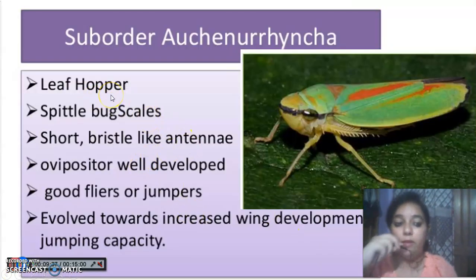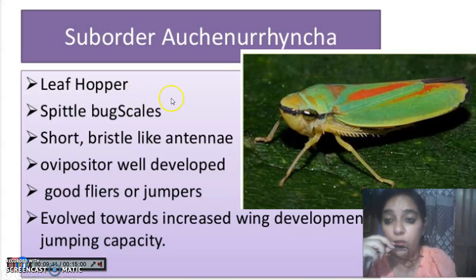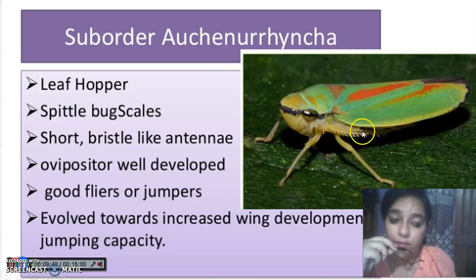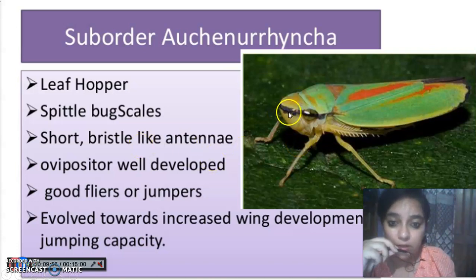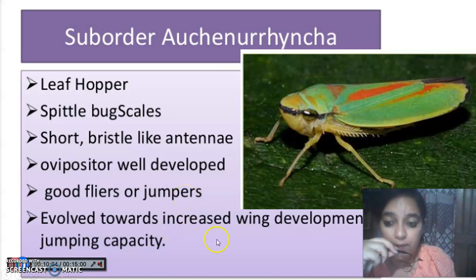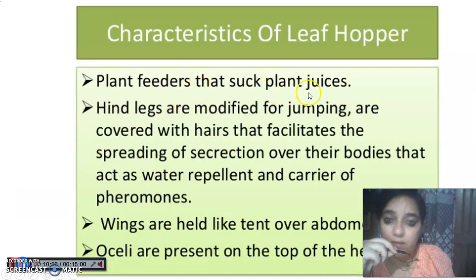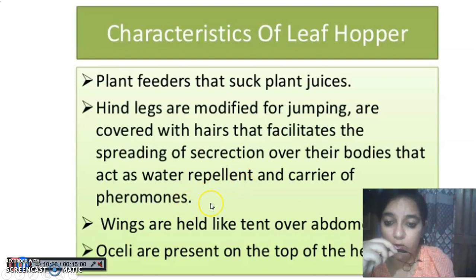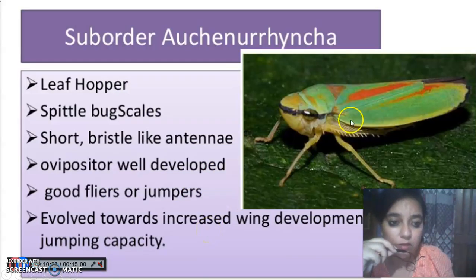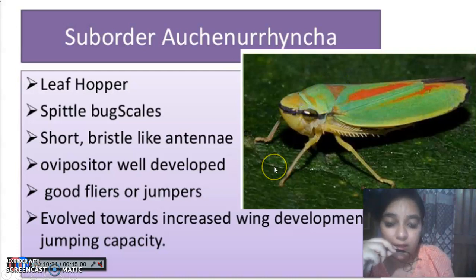Next is the leaf hopper. A normal layman might confuse it with a grasshopper from Orthoptera, but it is actually a bug. The antenna is not visible — it will be a short bristle-like structure. Leaf hoppers are good jumpers and can spread by wind dispersal and pheromones. If you look at the wings, they are tent-like, but it is a bug because it has a V-shaped scutellum and pronotum — the characteristic features of Hemiptera.